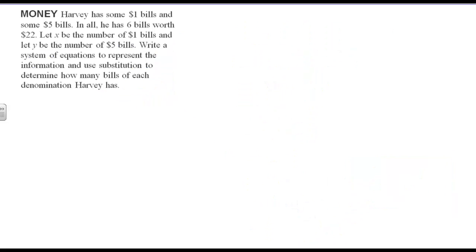So now we've got a word problem. Harvey's got some $1 and $5 bills, and all he has is 6 bills worth $22. Let x be the number of $1 bills and y be the number of $5 bills. Write the system and then solve for how many bills of each type he has.